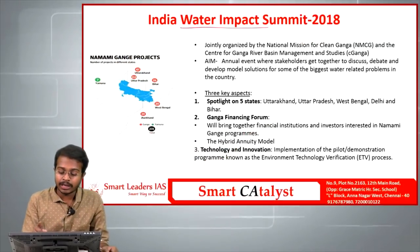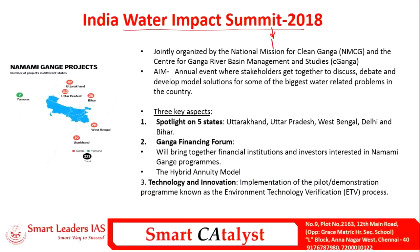The next article is the India Water Impact Summit of 2018, taken from PIB. The Indian government floated its flagship Namami Gange project in 2014 to clean the Ganga. To add momentum to this, the government conducted the India Water Impact Summit, focusing especially on the Ganga Basin states: Uttarakhand, Uttar Pradesh, West Bengal, Bihar, and Jharkhand. This summit is an annual event organized by the National Mission for Clean Ganga and the Centre for Ganga River Basin Management Studies, where stakeholders discuss and develop solutions for water pollution and cleanliness problems over the Ganga Basin.